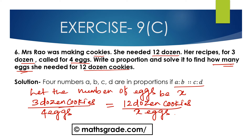Now we have to convert 3 divided by 4 into an equivalent ratio, where the antecedent becomes 12. We know 3 multiplied by 4 is 12, so we also multiply the consequent 4 by 4. Therefore 4 multiplied by 4 is 16, which gives us 12 divided by x is equal to 12 divided by 16.